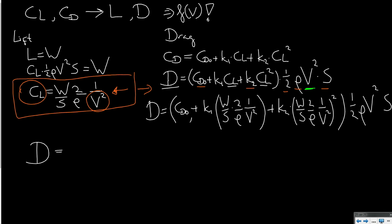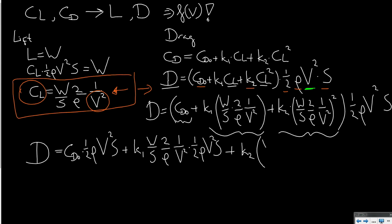It basically means I have drag equal to CD0 times half rho v squared S, plus K1 times weight over S, 2 over rho, 1 over v squared, multiplied with half rho v squared S, plus K2 times weight over S, 2 over rho, 1 over v squared squared, multiplied with half rho v squared S. A long equation, but we can actually remove some terms.